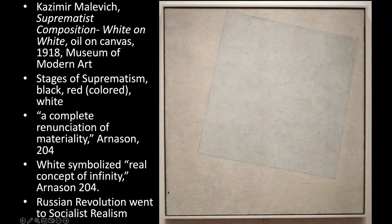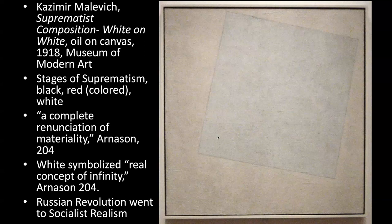When the Russian Revolution did happen, it wasn't necessarily led by the utopian socialists — it was led by the Bolsheviks, although all types of socialists were involved. The early people in charge of funding art in the revolution were really interested in these radical artists, because it expressed ideas they thought fit well with their ideas of Marxism and socialism.